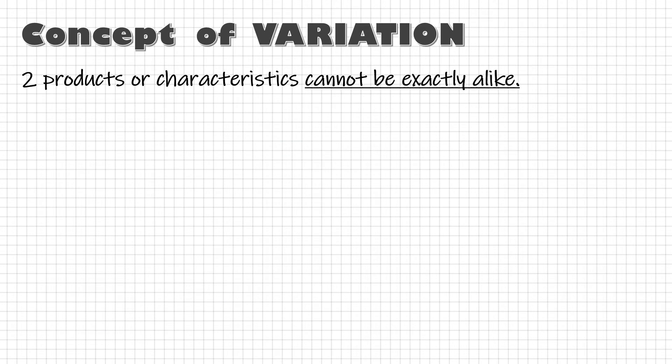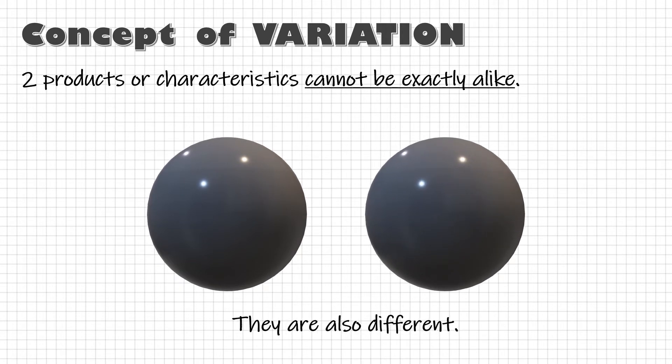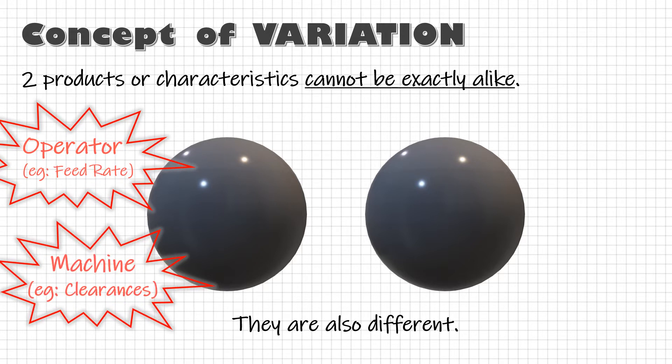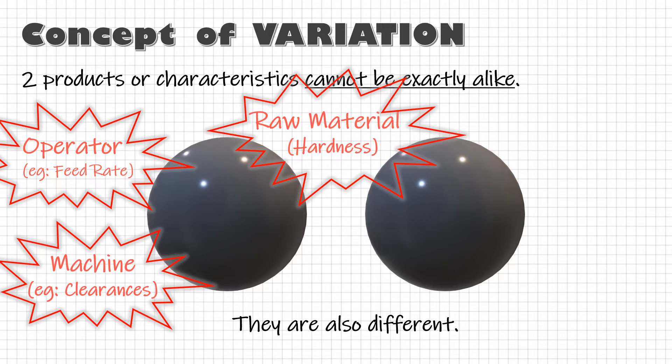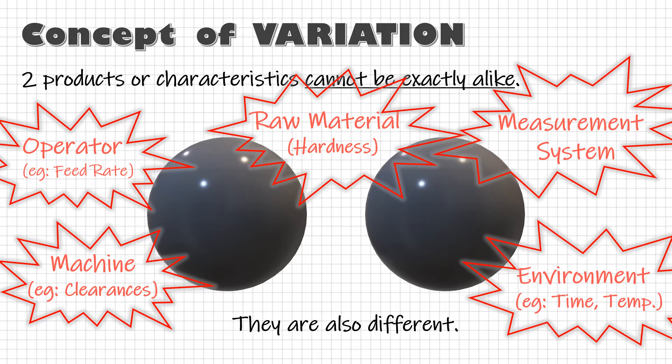It says no two products or characteristics are exactly alike. Now this difference can be large or immeasurably small, but it is there always because the process contains many sources of variability such as different operators, maintenance condition of equipment, variation of raw material, measurement system, or environmental condition.